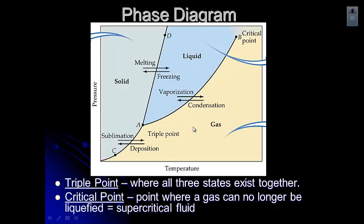And then B is called the critical point. And that's the point where a gas can no longer be liquefied. That's called a supercritical fluid. And that's used for things like decaffeinating coffee.